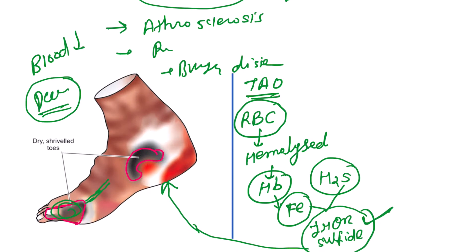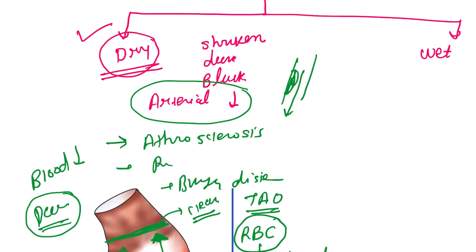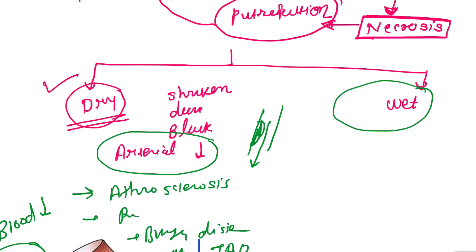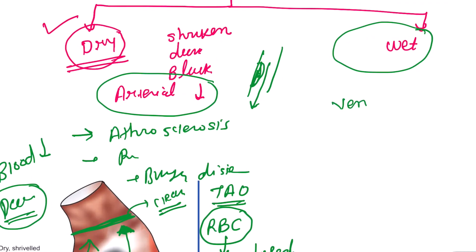Dry gangrene continuously progresses upward. It mostly starts from the periphery and goes towards the upper part, until the blood supply is intact. Therefore, the line of demarcation is very clear in dry gangrene — it progresses up to the point where it gets a proper blood supply.